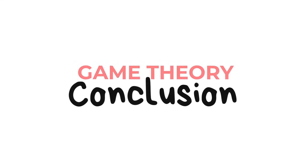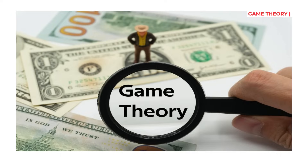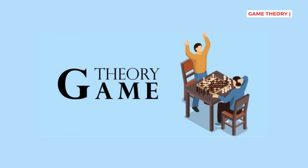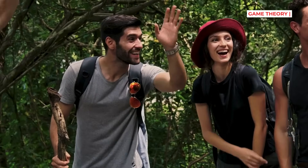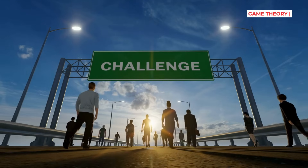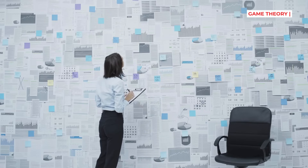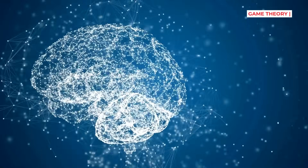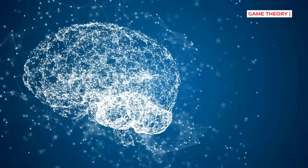In the end, game theory teaches us something profound: our fate is intertwined with others. The choices we make don't just affect us — they ripple out to everyone around us. When we understand these hidden patterns, we gain the power to transform lose-lose situations into victories for all. The insights of game theory apply to everything from your personal relationships to global challenges. By recognizing the games being played, we can make better choices and design better systems. The game is always changing, always evolving. And now, it's your move.